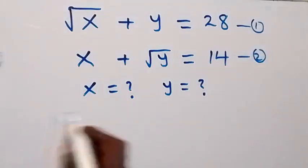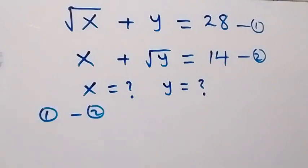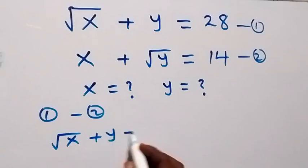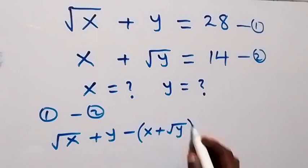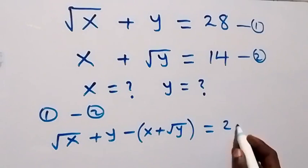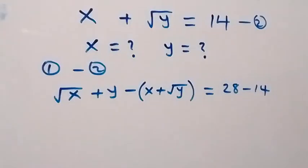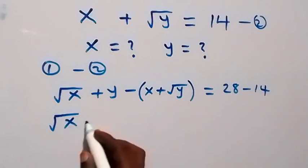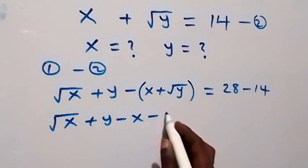And from here, subtract equation 2 from equation 1. We have equation 1 minus equation 2. What's on the left-hand side becomes √(x+y) in equation 1, then minus (x + √y) in equation 2, now equals 28 minus 14 on the right-hand side. From here, we open the bracket and we have √(x+y) then minus x minus √y.